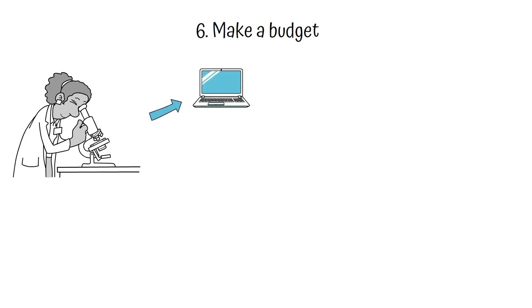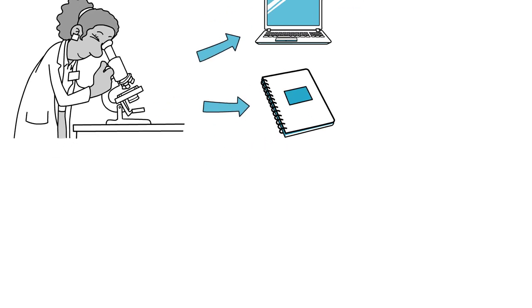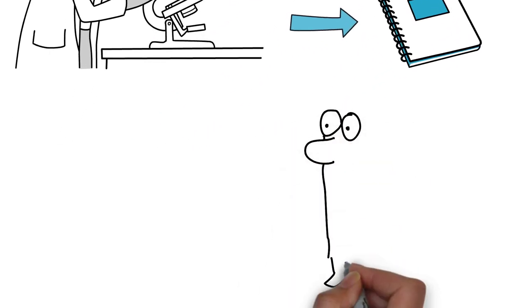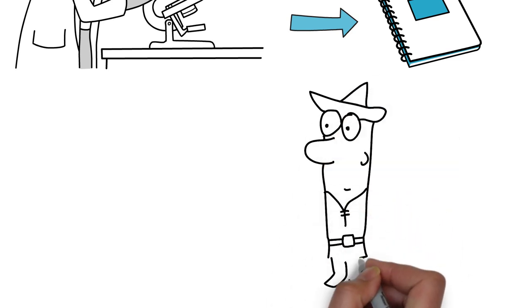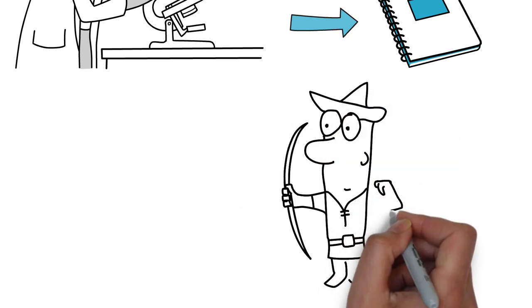You can use a budgeting app or software, or simply write everything down in a notebook. Once you have a good understanding of your spending habits, you can start to set financial goals for yourself and allocate your money accordingly.